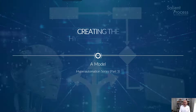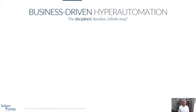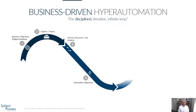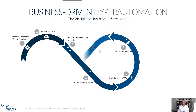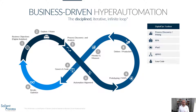Hello and thanks for joining me. This is part three in our hyperautomation series where we'll discuss a model for creating a hyperautomation organization. First, let's get you caught up on some foundational information. In part one of this series, 'What is Hyperautomation?', we covered the disciplined iterative infinite loop that is business-driven hyperautomation shown here. You'll find links for parts one and two in the YouTube comments below. This video builds on those parts, so if you haven't taken a look at those, you might want to do that when you have some time.